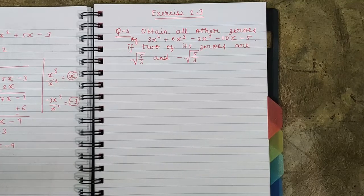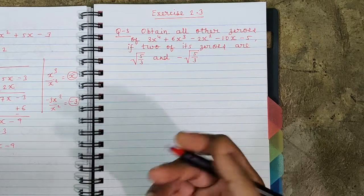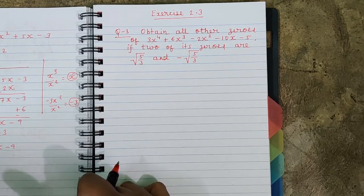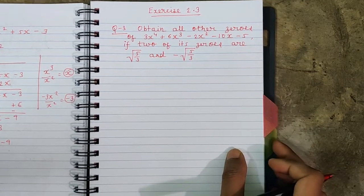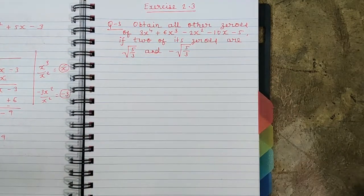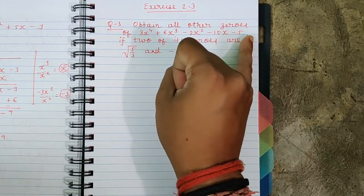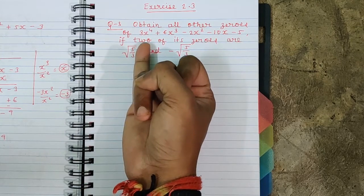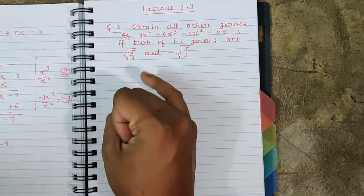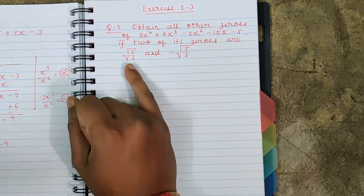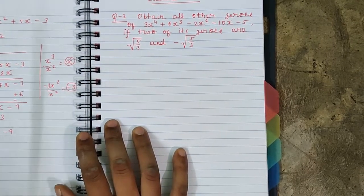Last time we saw Exercise 2.3 and some important sums. Remember, this pattern of sums where two zeros are given and the other two zeros are to be found is a very important pattern — maybe a three or four mark question. I discussed one example previously and told you to try question number three. So let us start: obtain all other zeros of the polynomial 3x⁴ + 6x³ - 2x² - 10x - 5. This is a polynomial of degree four, so four zeros are possible.